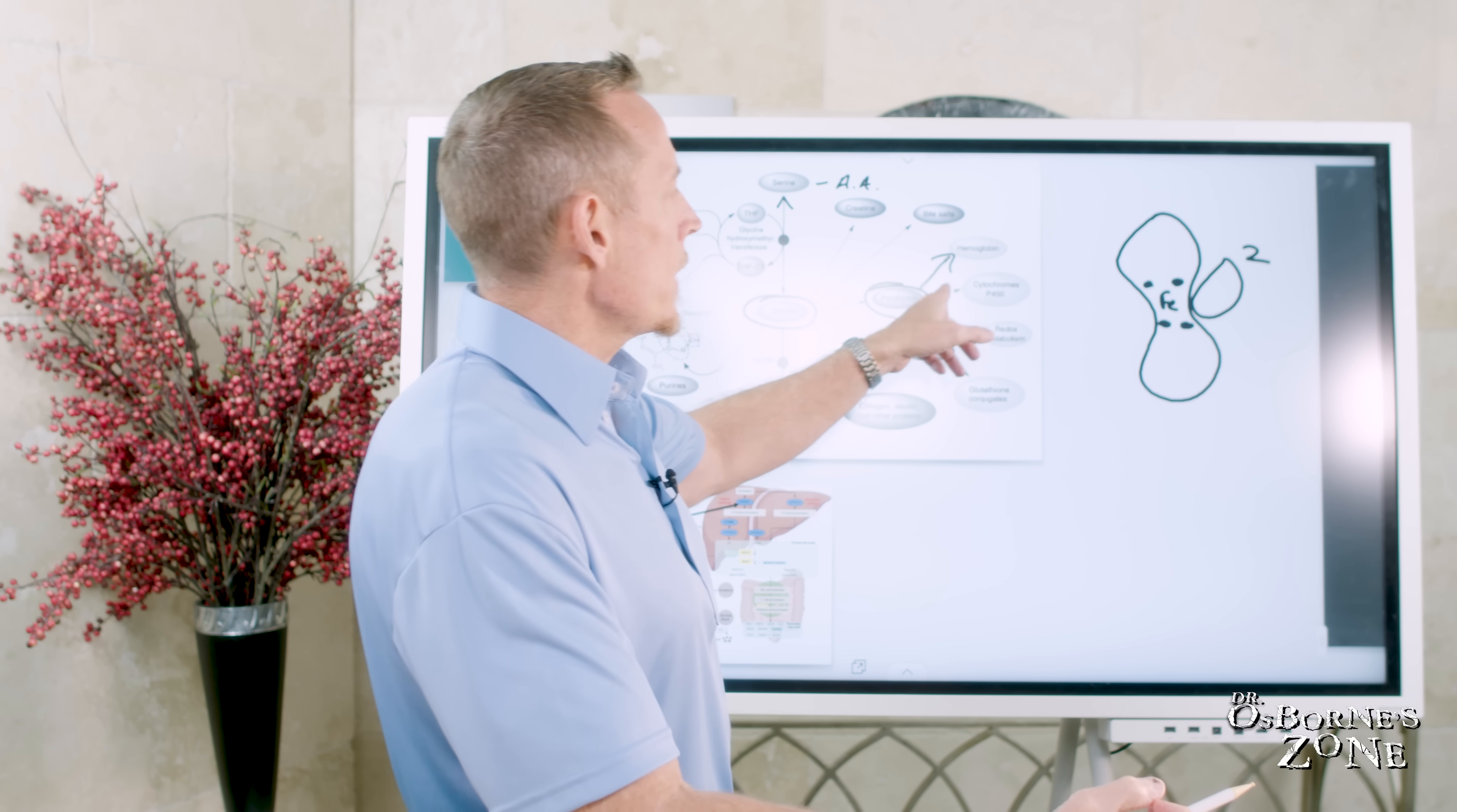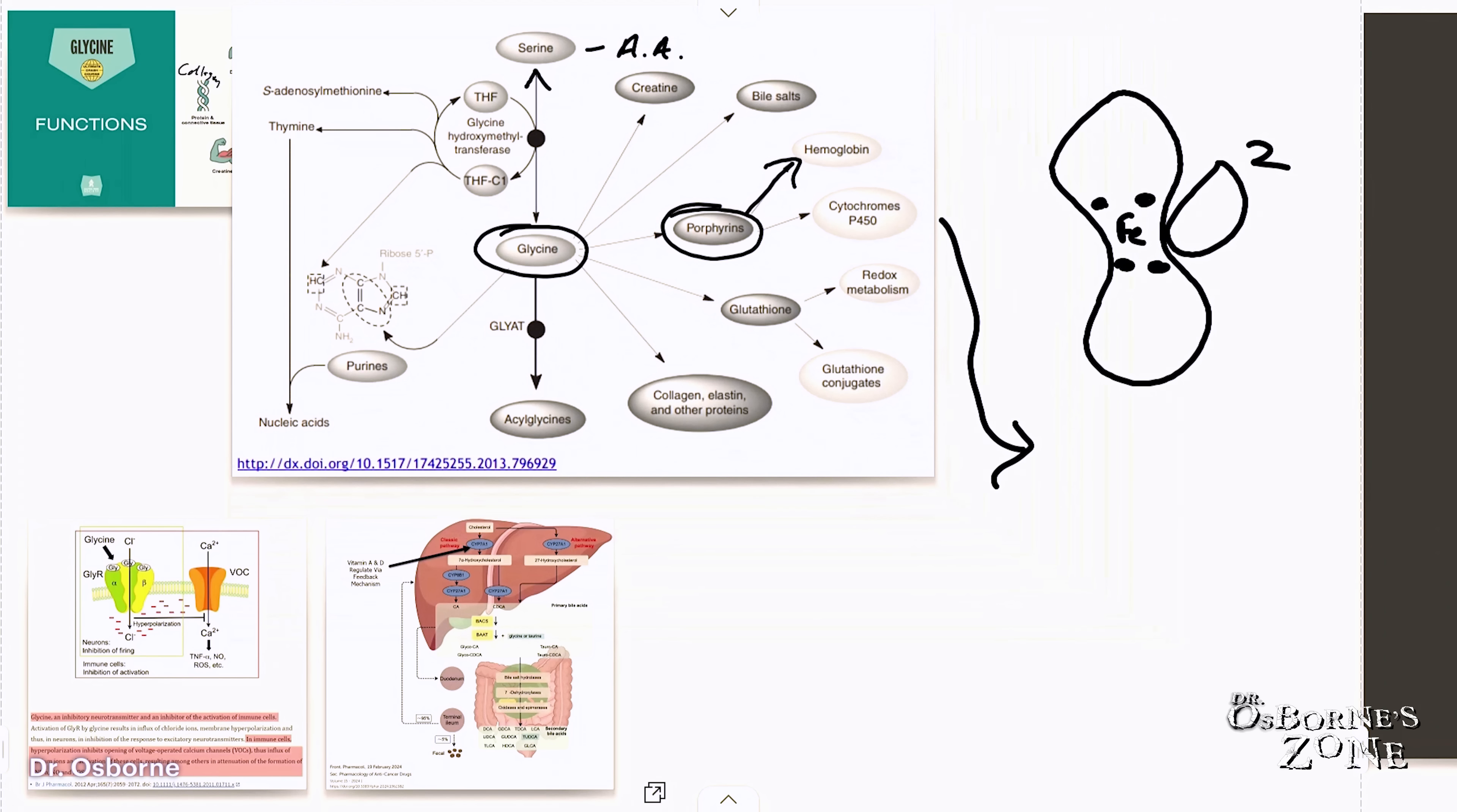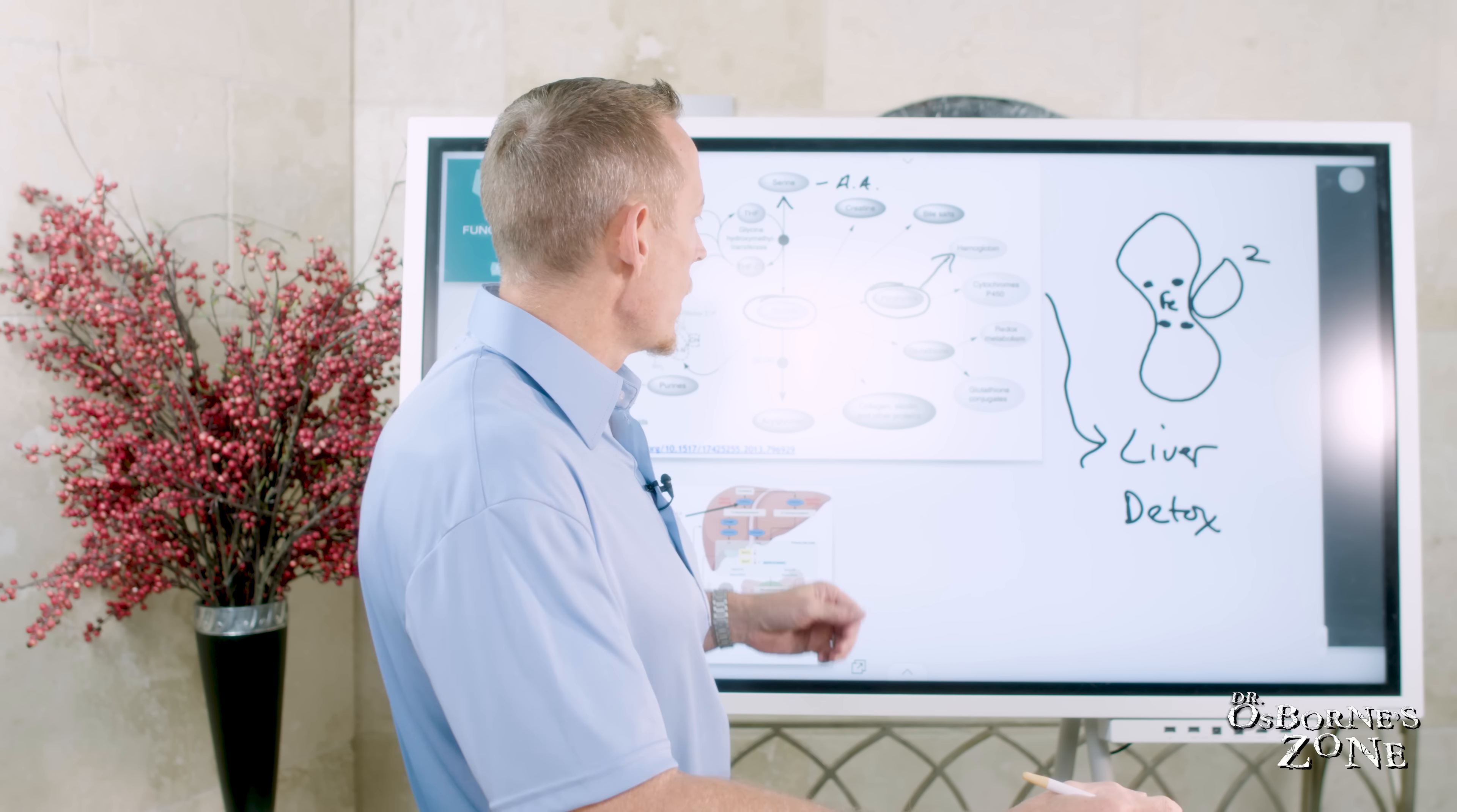Now, we know there's also porphyrin-based compounds like cytochrome. Cytochrome P450 is one of the main agents in your liver that's responsible for detox or detoxification. And without glycine, it can't be produced.